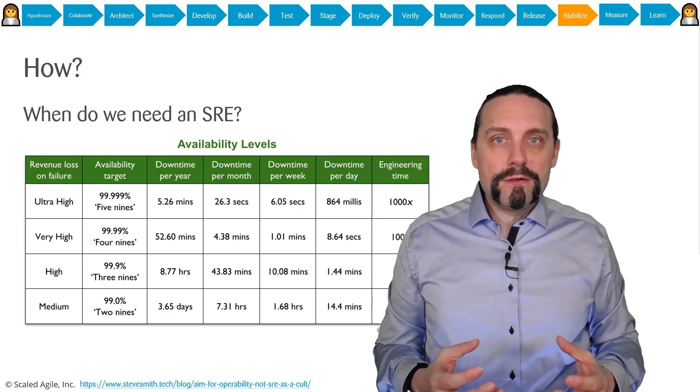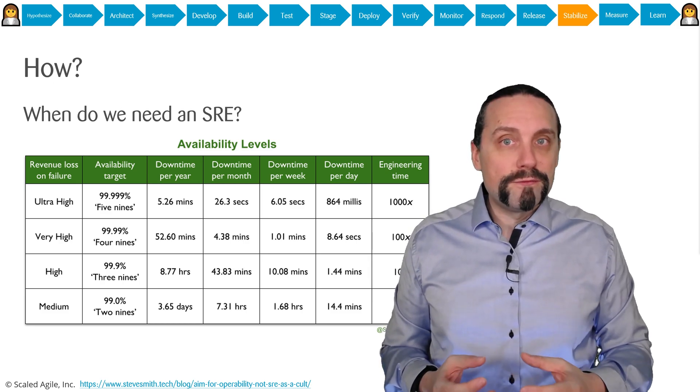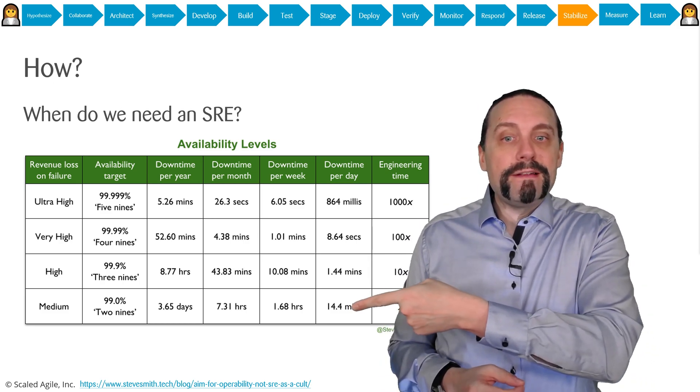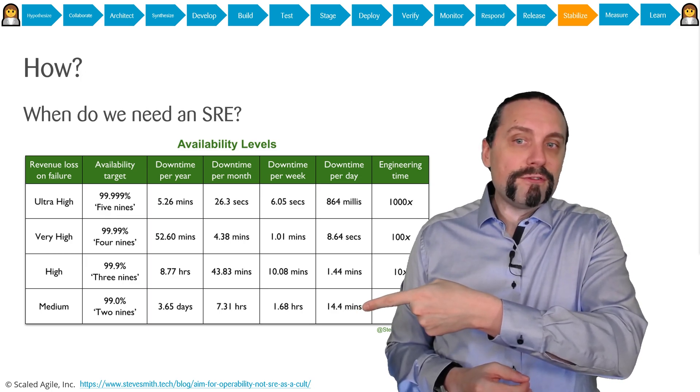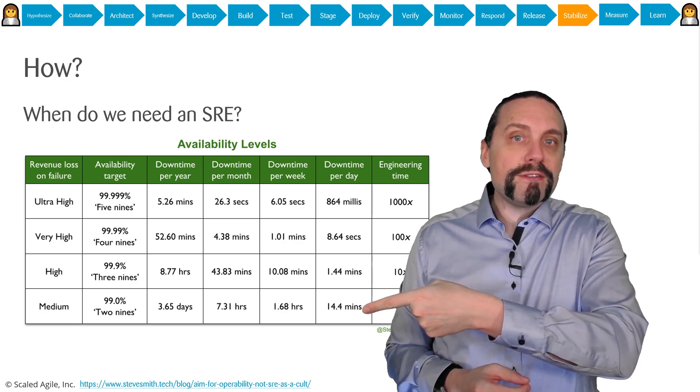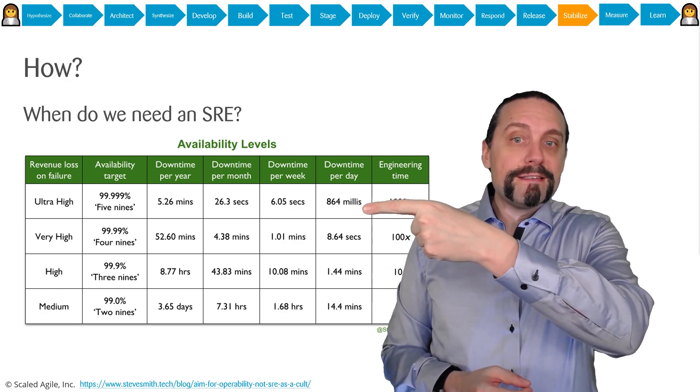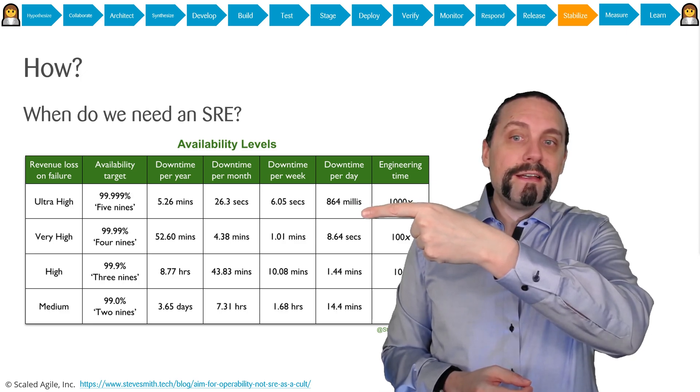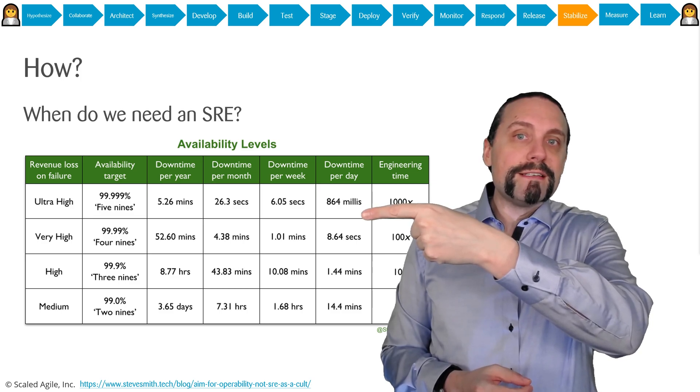This SLO will tell us that when we have an availability target of two nines, we can have a downtime per day of 14 minutes and a downtime per year of 3.65 days. When we're at five nines, we only have a downtime per day of 864 milliseconds and a downtime per year of 5.26 minutes.